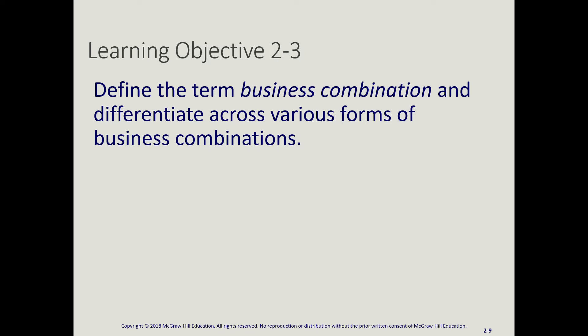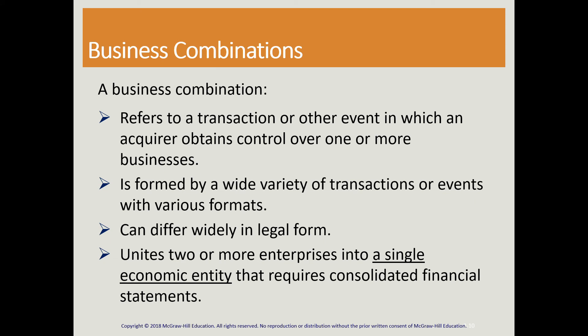In learning objective three, we're looking at business combinations and the various forms that exist. A business combination refers to a transaction or other event in which an acquirer obtains control over another company. Control is usually defined as owning more than 50%, and it could be done through various transactions and events. It may not be the same as what these companies represent in legal form, and we're treating two or more enterprises as a single economic entity, thus consolidating their financial statements.